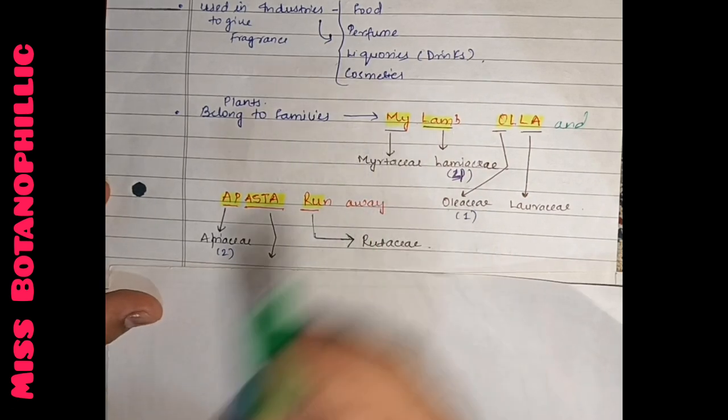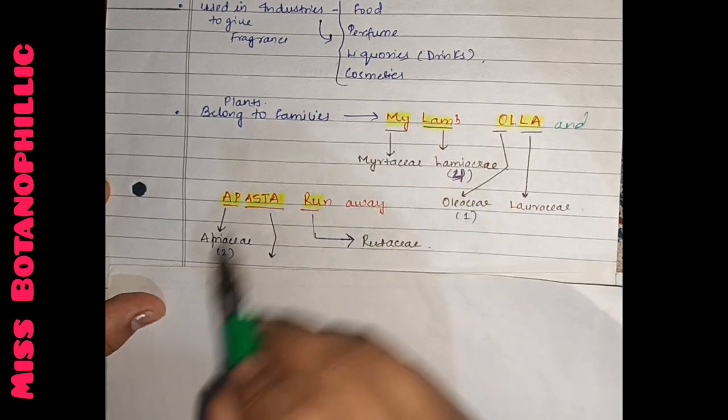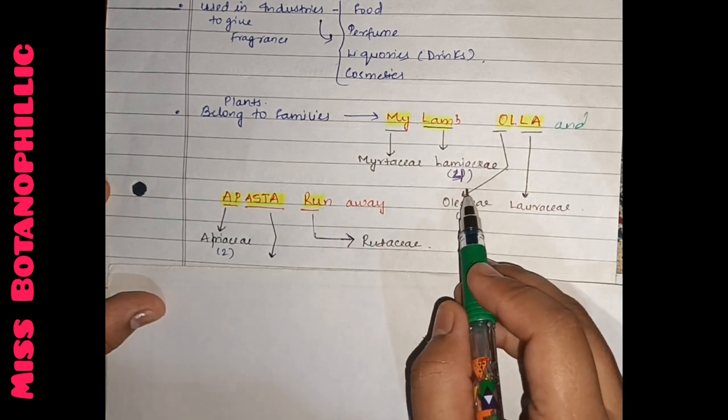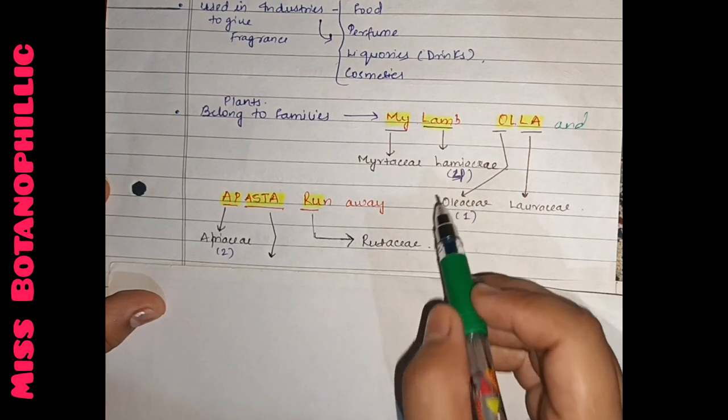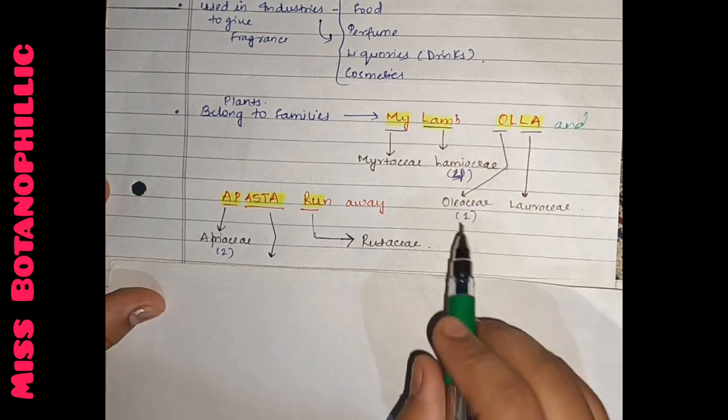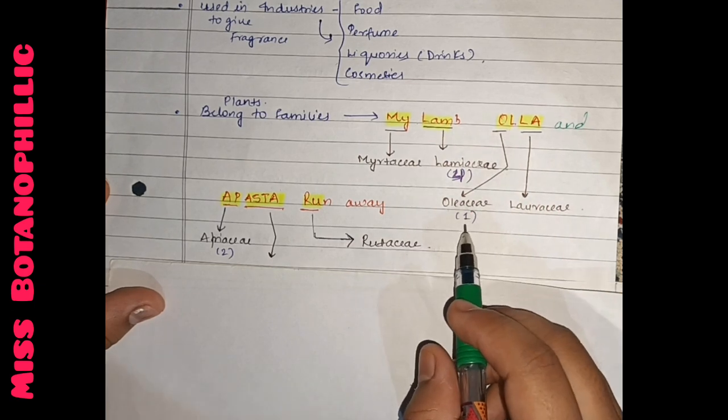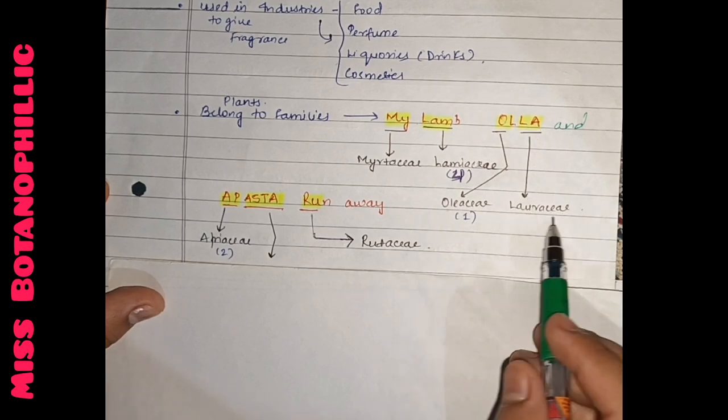My means Myrtaceae. Lamb means Lamiaceae. I have included four members. The Ola word, which means Oleaceae - one member I have included.